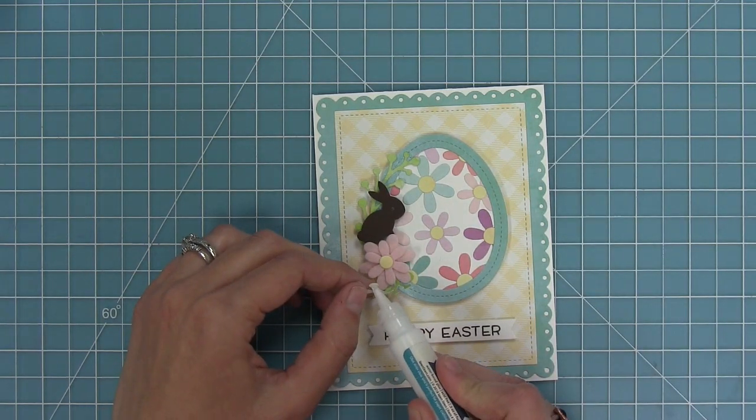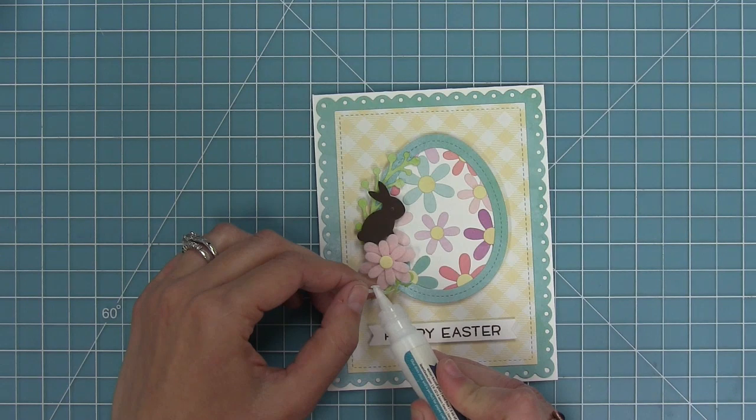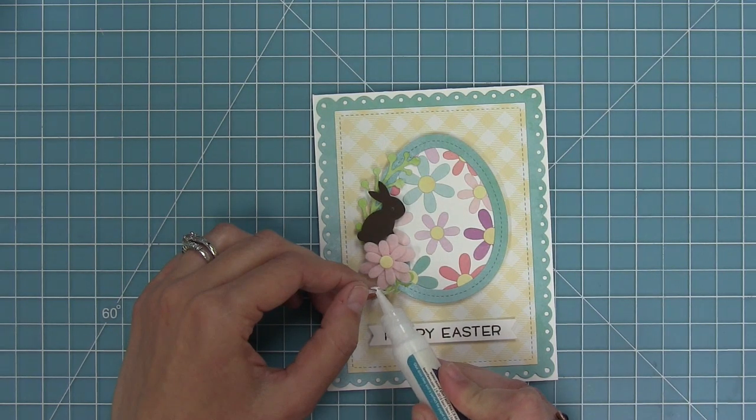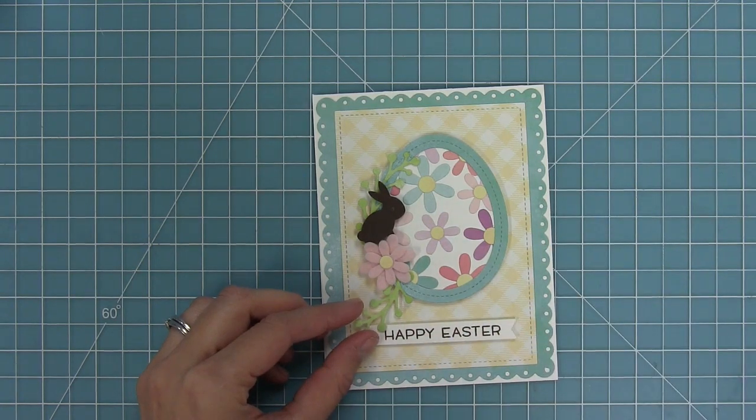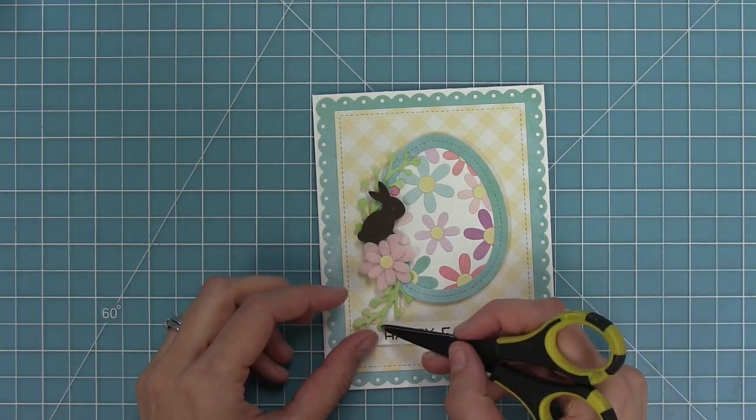But to fix that all I did was just bend that little piece of paper, add a little glue to just one part of that little sprig there and I can bend the paper and then I'm going to hold it in place onto the easter banner and that's going to keep it in the perfect place so that it's not covering the banner.